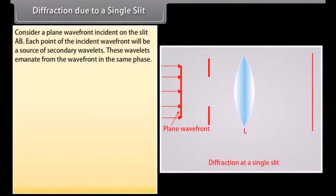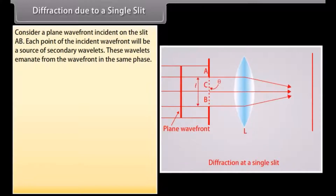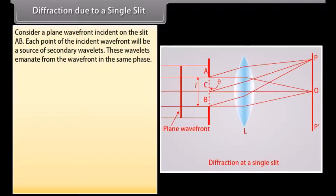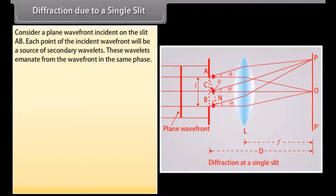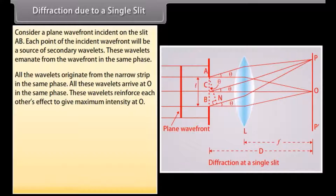Consider a plane wavefront incident on slit AB. Each point of the incident wavefront will be a source of secondary wavelets, which emanate in the same phase. To understand the formation of central maximum, the slit can be imagined to be divided into a number of very narrow strips of equal width parallel to the slit. All wavelets originate from each narrow strip in the same phase and arrive at O in the same phase, reinforcing each other to give maximum intensity at O.